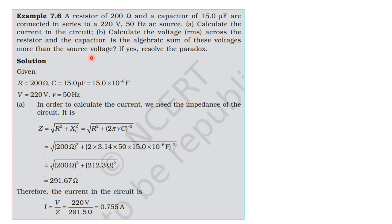From the NCERT textbook, from the topic of alternating current, learn by example 7.6. A resistor of 200 Ohm and a capacitor of 15μF are connected in series to a 220V, 50Hz AC source. Calculate the current in the circuit and the RMS voltage across the resistor and capacitor. Is the algebraic sum of the voltages more than the source voltage? If yes, resolve the paradox.